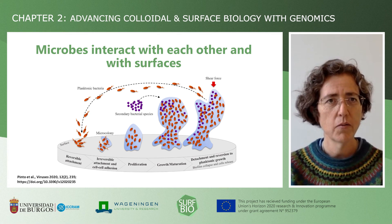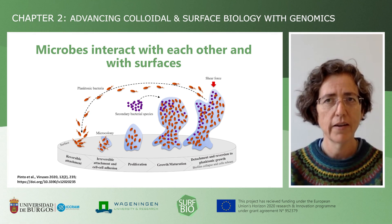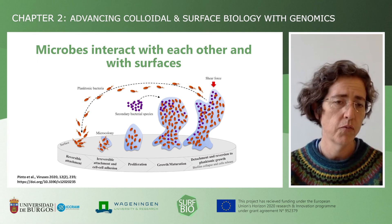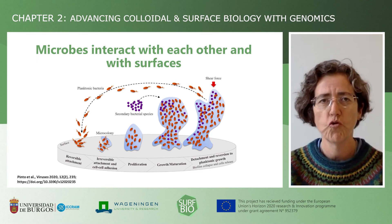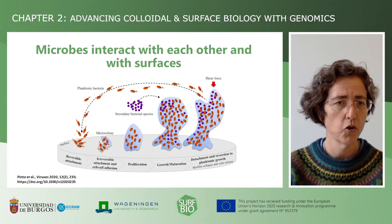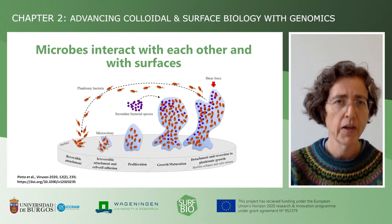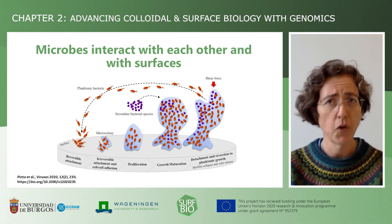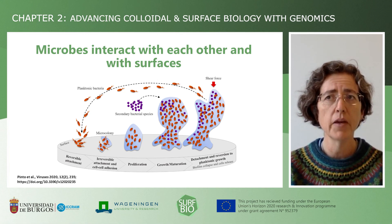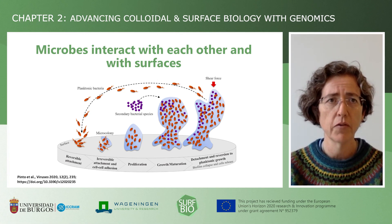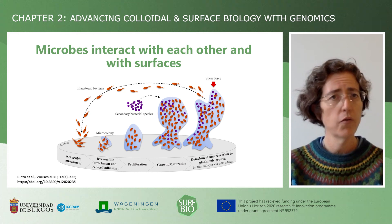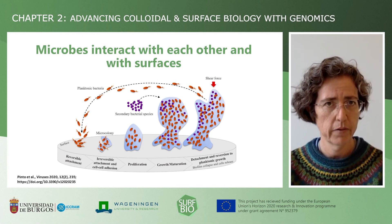In the natural environment, bacteria can exist as free-floating or swimming, also called planktonic. They can form flocks, or they can be attached to a surface in the form of biofilms.